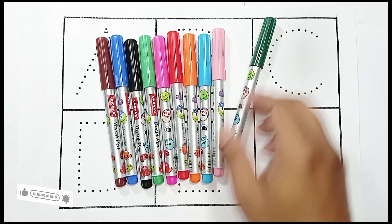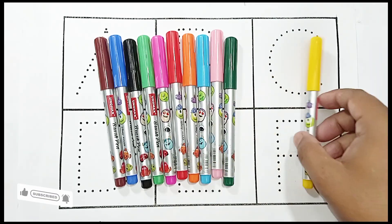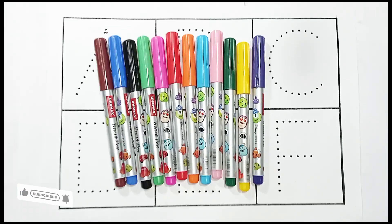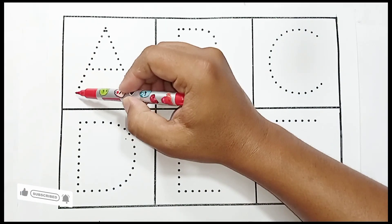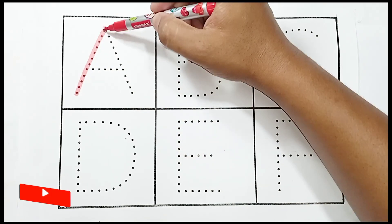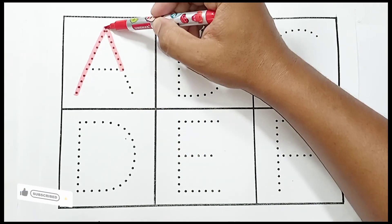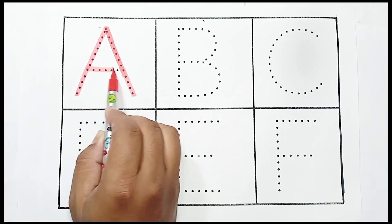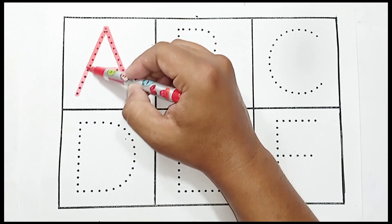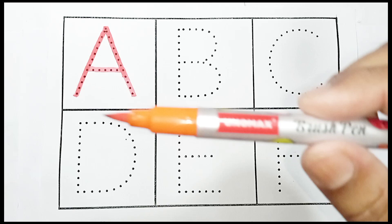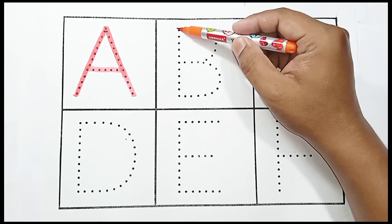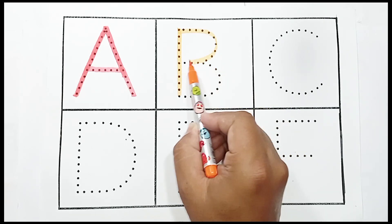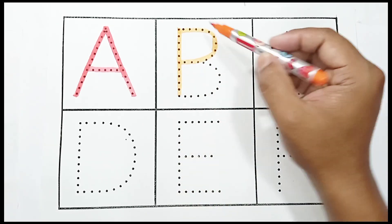Green color, yellow color, violet color, red color. A, A for ant, A for ant. Orange color. B, B for balloon, B for balloon.